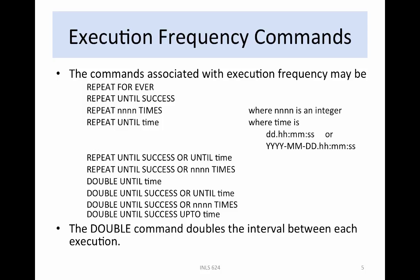The commands associated with execution frequency are: repeat forever, repeat until success, repeat n times (n is an integer), repeat until time (where time is day hour minute second or year month day hour minute second), repeat until success or until time, repeat until success or n times, double until time (this doubles the wait period each time it's executed), double until success or until time, double until success or n times, and double until success up to a given time.